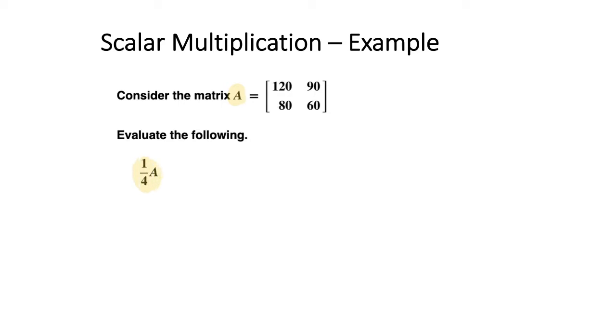One quarter is going to be our scalar amount. That means we're going to be multiplying each value within the original matrix by one quarter.